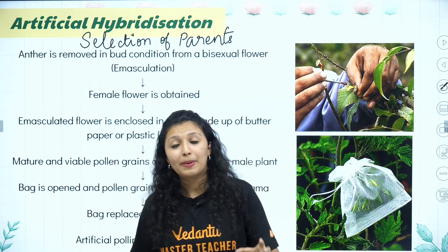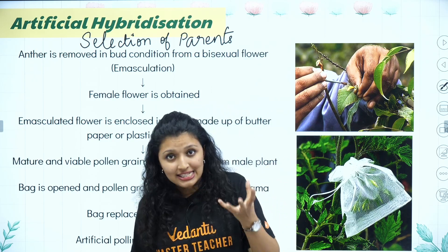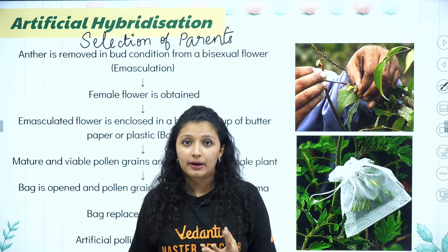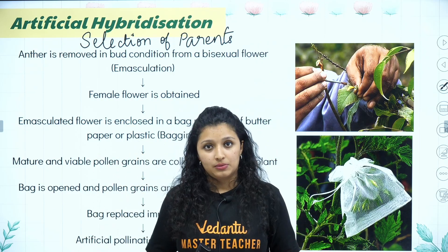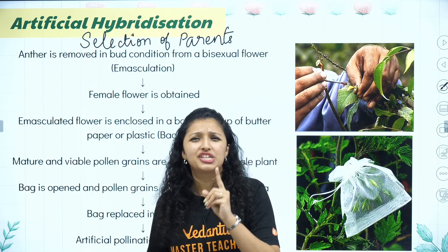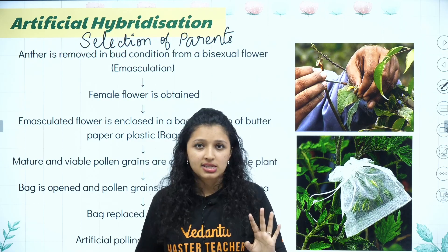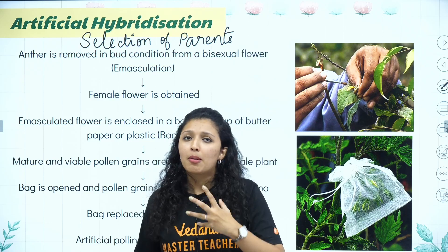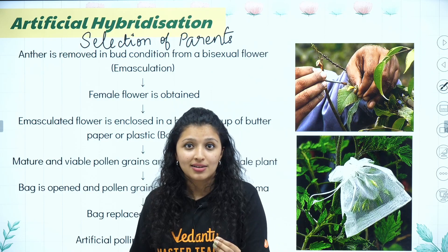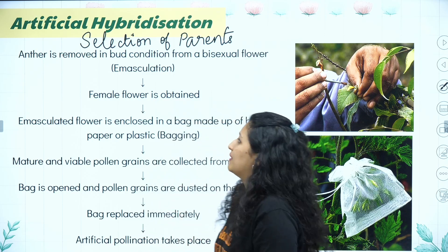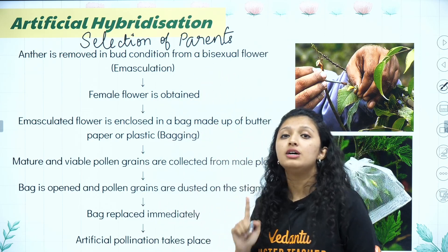We want to get both characters — large size from plant A and large number from plant B — into one plant. The probability of getting this randomly is very low, but if we achieve that plant it will be very good. So selection of parents is the first step.